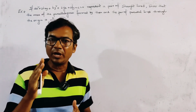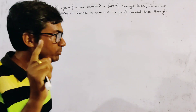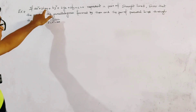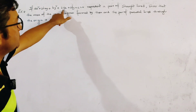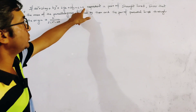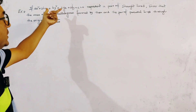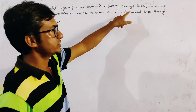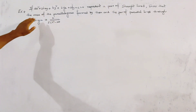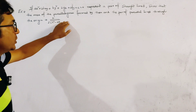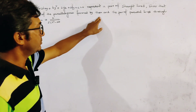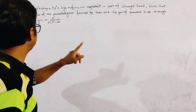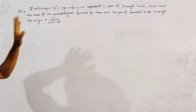Today's problem is from pair of straight lines. The problem is: if ax² + 2hxy + by² + 2gx + 2fy + c = 0 is the general equation of second degree and represents a pair of straight lines, then the area of the parallelogram formed by them and the pair of parallel lines through the origin is given by a specific formula.